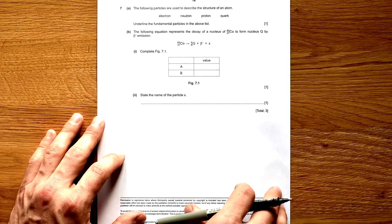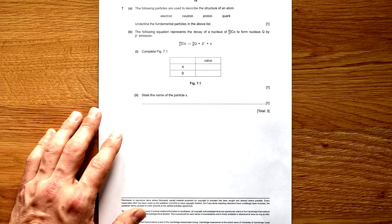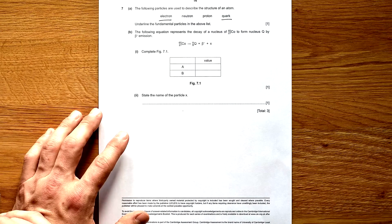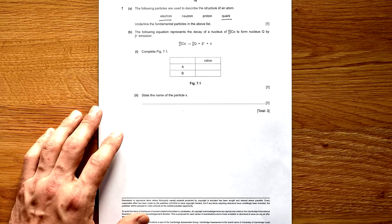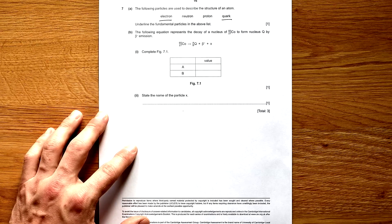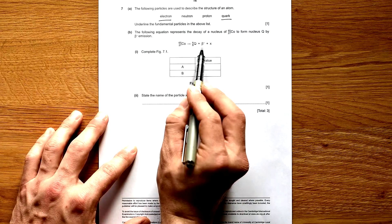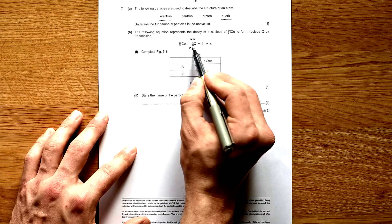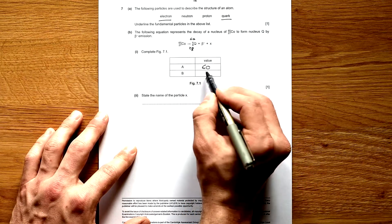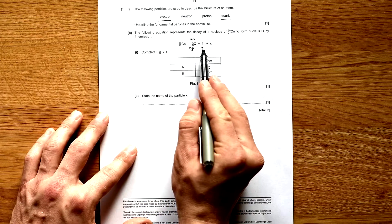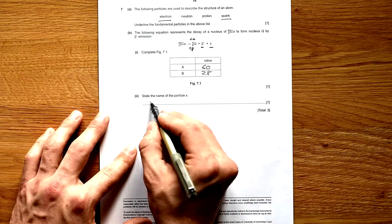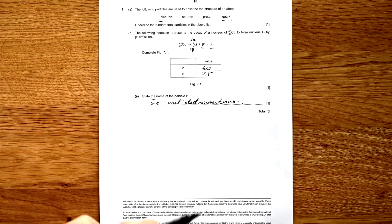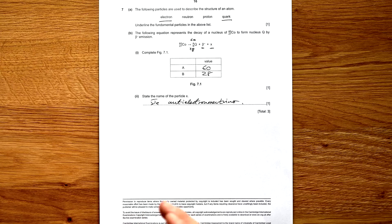Question 7: from the list of particles used to describe atomic structure, underline the fundamental particles — electron and quark. Neutrons and protons are made of quarks. The equation represents the decay of cobalt-60 via beta decay: the overall mass stays the same, a neutron turns into a proton, so atomic number goes up by 1, giving nucleus Q as 60, 28. Particle X emitted alongside the electron is an anti-electron neutrino — anti-neutrino would get you the mark.